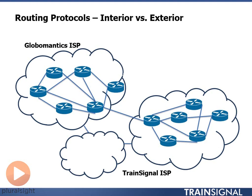What I've drawn here is three clouds, and these clouds represent internet service providers. This empty cloud represents the internet as a whole. Then we have GlobalMantics ISP, which is a made-up internet service provider, and we have the TrainSignal ISP, which is another made-up internet service provider.